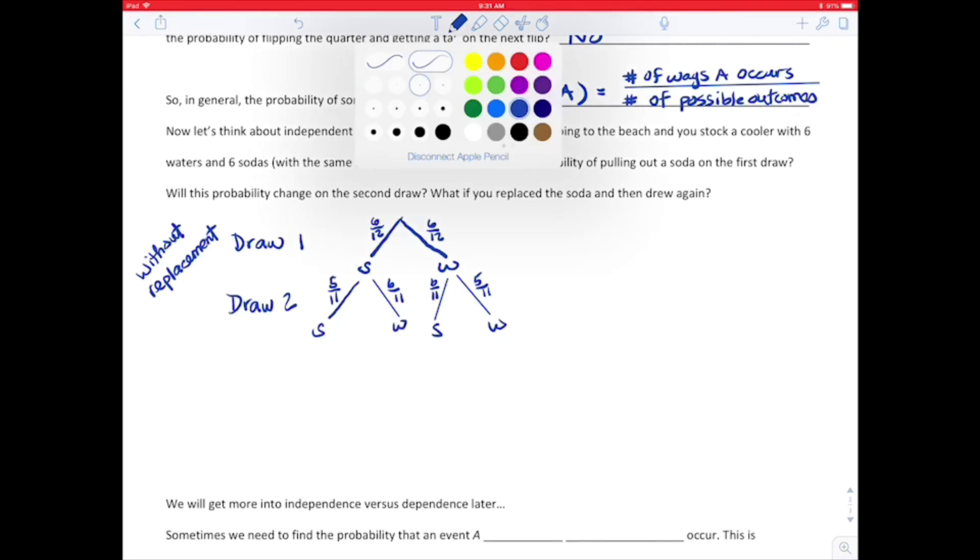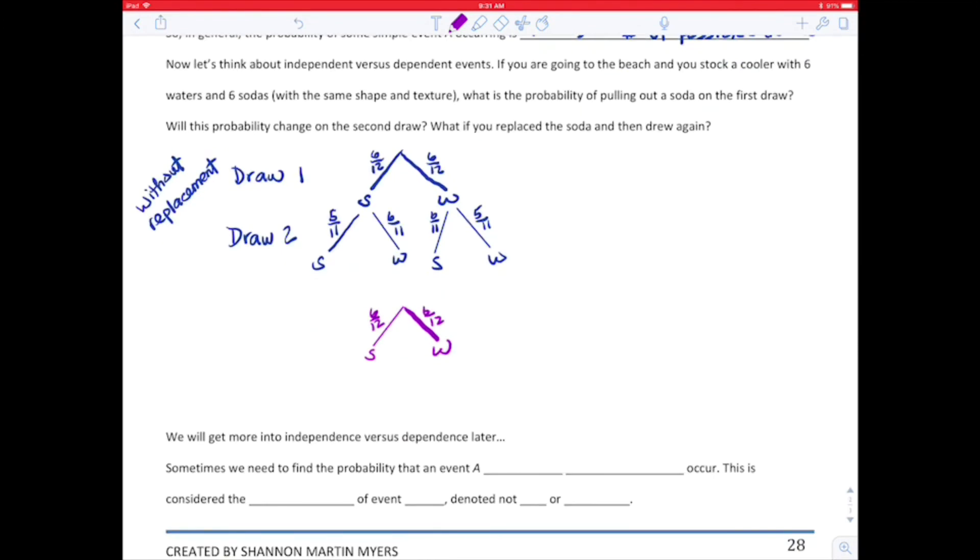So now if we went with replacement, what would happen? So with replacement, we would have again the same starting point. You could have a soda or a water, six out of 12, six out of 12, right? But if you put what you got the first draw, so that would be your scenario for the first draw. But if you put that back, what's going to happen? You're still going to have six out of 12 for your probability of each of them because you put it back.